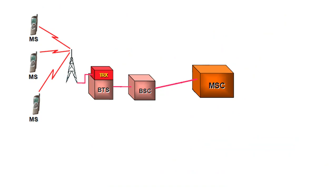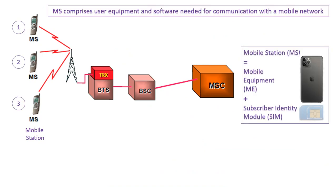Now what is MS? MS is nothing but the mobile station, so there are three mobile stations in this diagram. MS comprises user equipment and software needed for communication with the mobile network. MS is the combination of mobile equipment — the handset — plus the SIM card which is inserted inside the mobile phone. So multiple mobile stations are connected to a single tower.